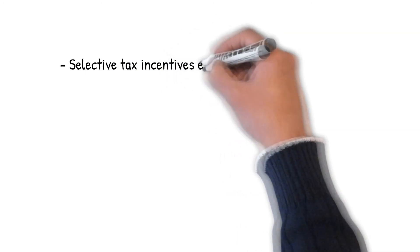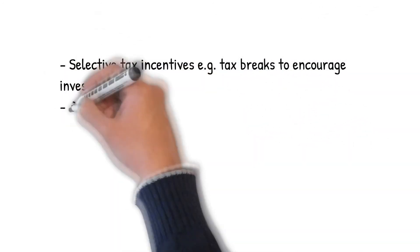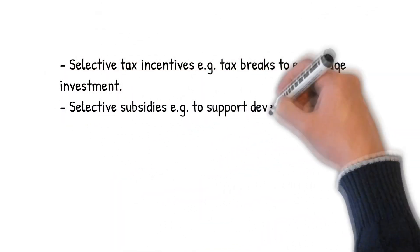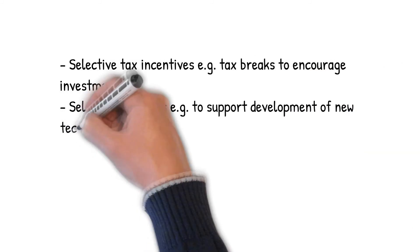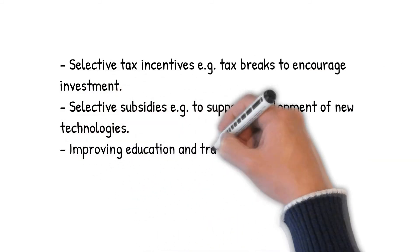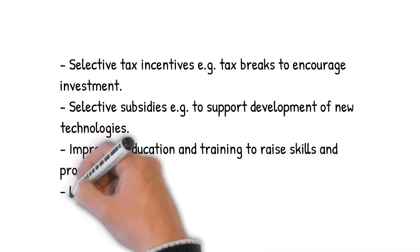The last government policy for today is supply side policies. Supply side policies attempt to boost the productive potential of an economy and increase aggregate supply. The idea is to increase growth, increase jobs, increase incomes, and also to lower inflation. Examples of supply side policies include selective tax incentives — for example, tax breaks to encourage investment.